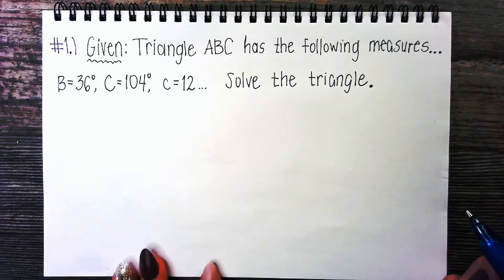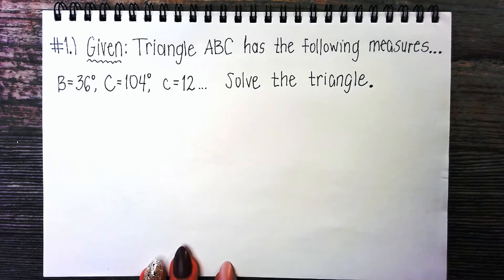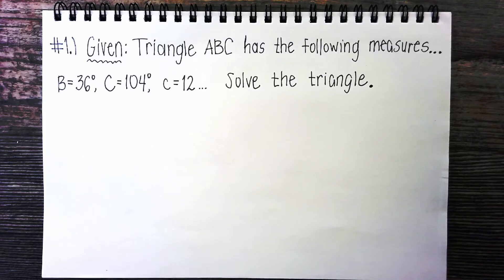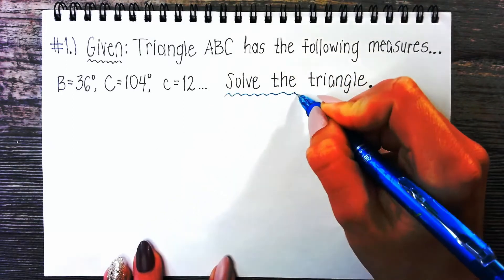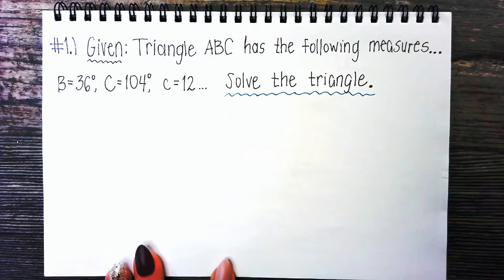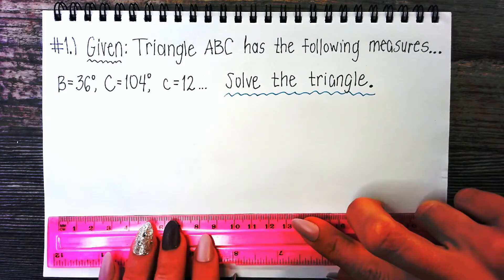The first question from your homework: Triangle ABC has the following measures — angle B is 36 degrees, angle C is 104 degrees, and side c is 12 units. Solve the triangle. What do I mean by solve the triangle? We mean to find all of the missing sides and all of the missing angles.